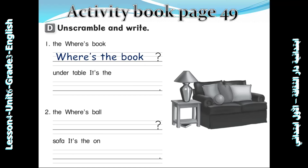Activity D: Where is the book? What's the answer? The correct way to say it is: It's under the table. Where is the book? It's under the table.